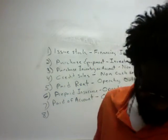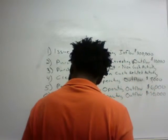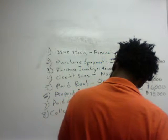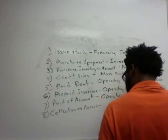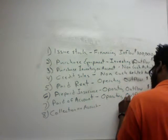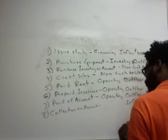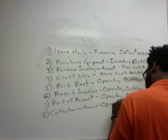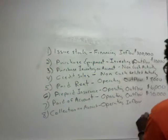Transaction eight: we collected $55,000 on our account. When you collect on account, you debit cash and credit accounts receivable. Debiting cash makes it an inflow, and since accounts receivable is a current asset, this brings it back into the operating category — an operating inflow of $55,000.